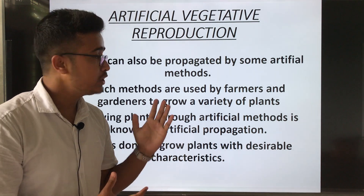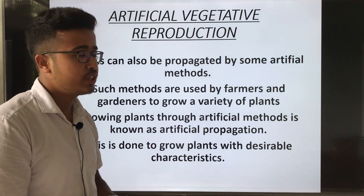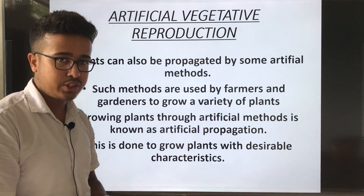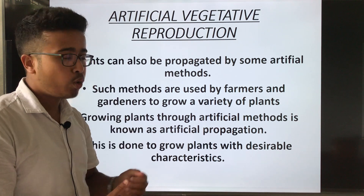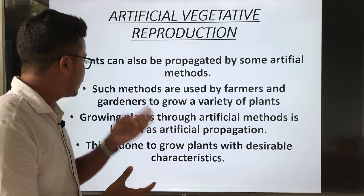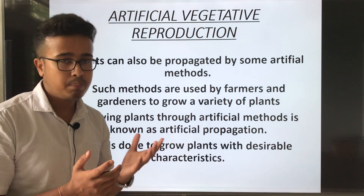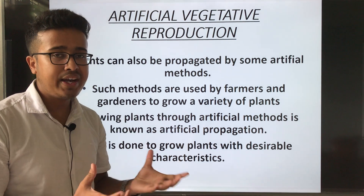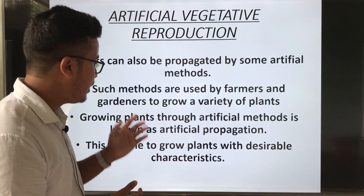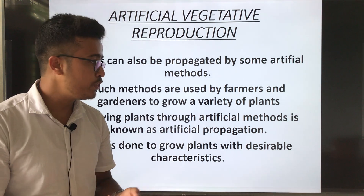Our first topic is artificial vegetative reproduction. What is artificial vegetative reproduction? Plants can also be propagated by some artificial method — that means manmade methods. Such methods are used by farmers and gardeners to grow a variety of different types of plants. Growing plants through artificial method is known as artificial propagation.